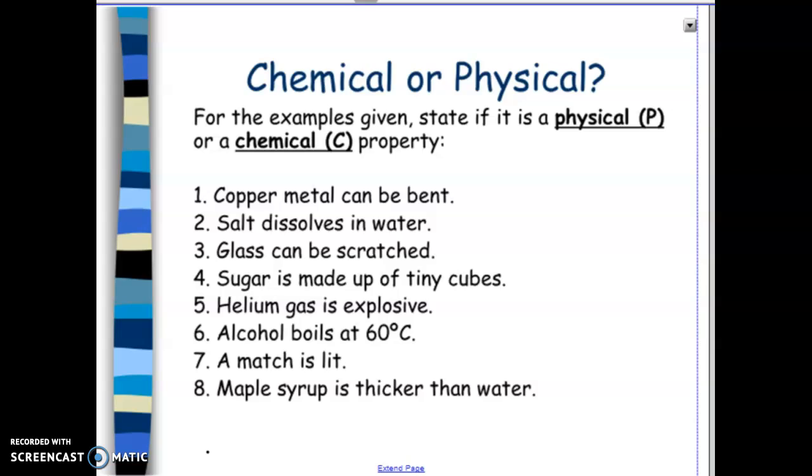So what I'd like you to do, we have eight different statements that are here. What I'd like you to do is say, is it a physical property or a chemical property? So just jot this down on a piece of paper or something. So just the number and if it's a P or a C. And what I'd like you to also do is write down what type of property is it describing? So for example, is it describing the color of something? Is it describing the density of something? Is it the flammability of something? So take a look. We'll write down if it's a physical or chemical property, and then what type of property it is describing. Pause the video here.